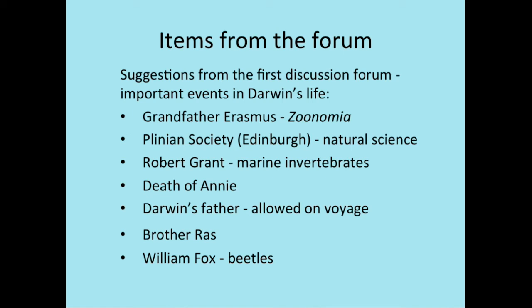Another one that came up several times is the death of Annie Darwin. This has been depicted in a movie — basically, Annie was his oldest daughter and she died when she was 10 years old. I think it had a particularly strong effect on Darwin because she was very lively, full of life — maybe his favourite daughter. She got a fever and she never recovered. Darwin was already losing his sort of belief, and I think some people would think that this was like the final straw for Darwin — there's no merciful God, life is just as it is.